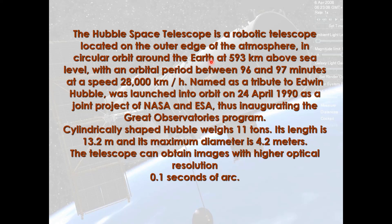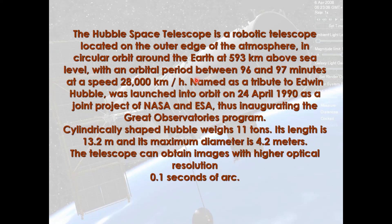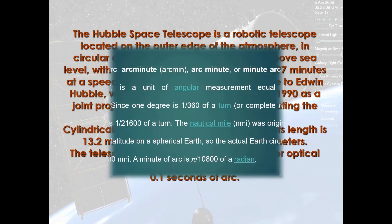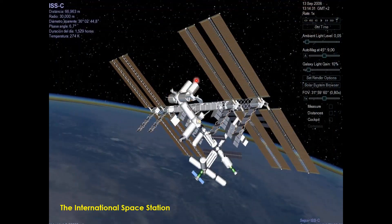The camera can capture images with a resolution of 0.1 seconds of an arc. An arc minute is an angular measurement equal to 1/60th of a degree, so one complete rotation would be around 1/21,600 of a turn. With a resolution of 0.1 arc seconds, we can just imagine how good the accuracy of this camera is.